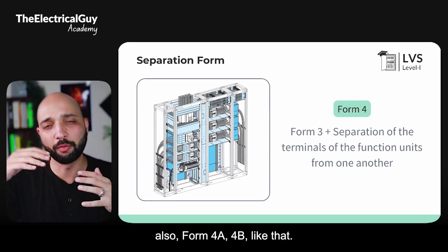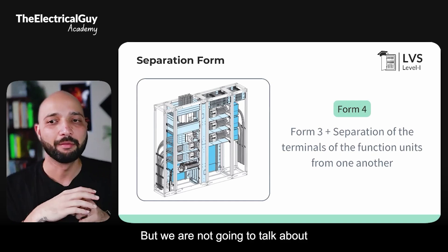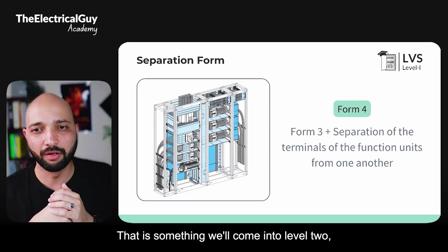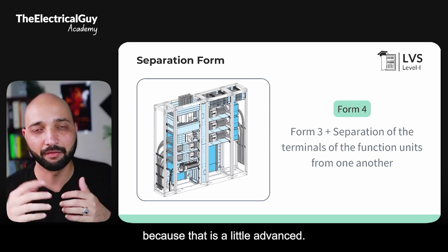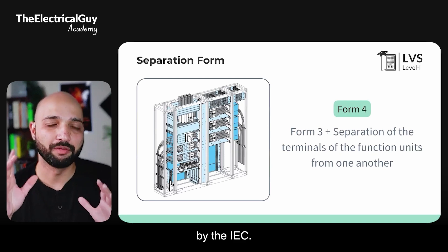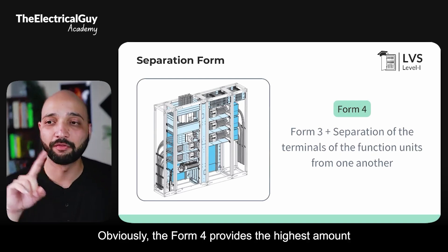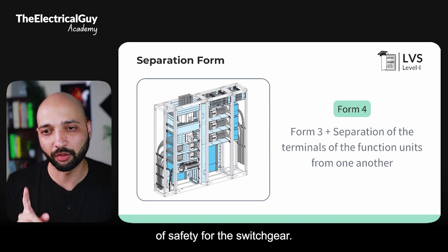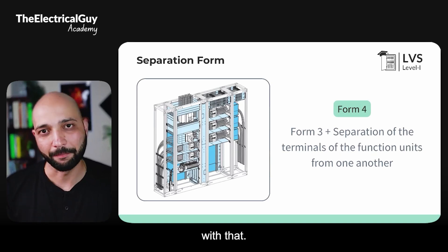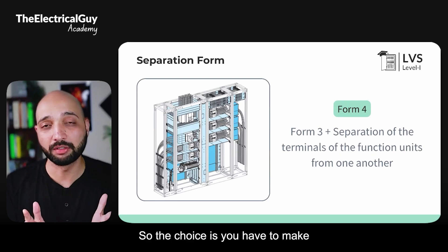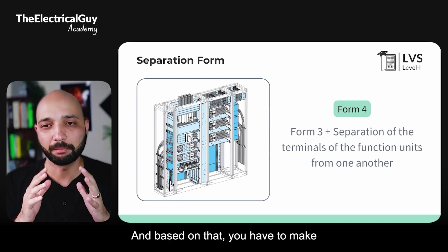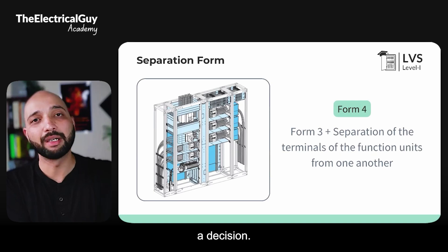Within these forms there are also subcategories such as Form 4A and 4B, but those are more advanced and will be covered at Level 2. The main four forms are defined by the IEC. Form 4 provides the highest safety, but the cost of the switchgear is also linked to that, so the choice must be made cautiously based on the required level of safety.